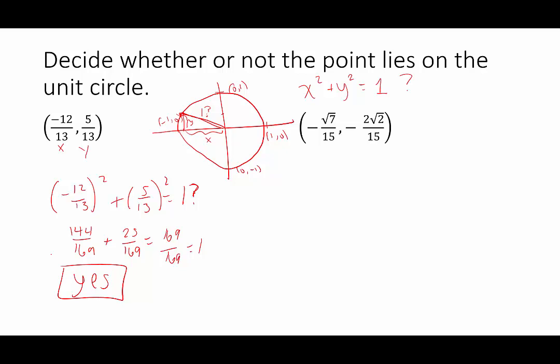Our next example, we have the -√7/15 and the -2√2/15. We want to know does this lie on the unit circle? So does (-√7/15)² + (-2√2/15)² equal 1? This would end up being, so squaring a negative will turn it positive. This is going to be 7/225. This is going to be 2² is 4, √2² is 2, so 4×2 is 8 over 225. This equals 15/225. I don't even need to simplify it to see this does not equal 1. So does this lie on the unit circle? No, it does not. It's just some other random point.